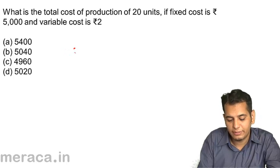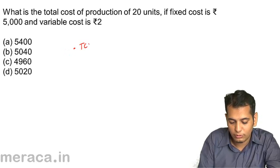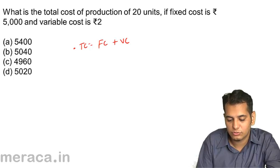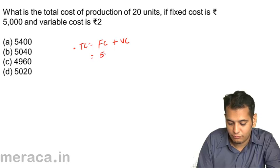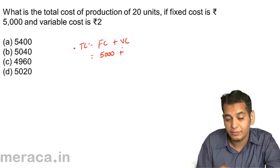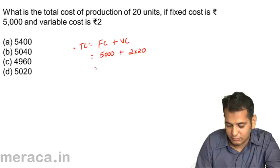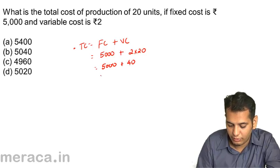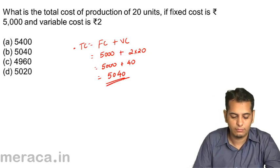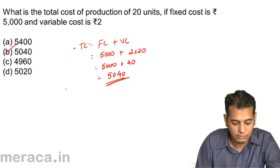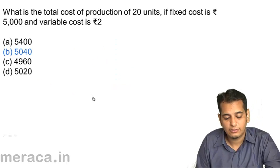Total cost equals fixed cost plus variable cost. Fixed cost is 5000. Variable cost is Rs. 2 for 1 unit, so for 20 units it will be 5000 plus 40, which equals 5040. That's the answer.